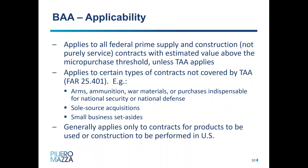When does BAA apply? It applies to all federal prime supply and construction contracts with an estimated value above the micropurchase threshold, unless the Trade Agreements Act applies. BAA does not apply to purely service contracts — only supply and construction contracts. BAA doesn't kick in for very small contract awards under the micropurchase threshold, which currently is $10,000 in most circumstances. And once TAA kicks in at around $187,000 for supply contracts, the Buy American Act restrictions would no longer apply — it would be one or the other.